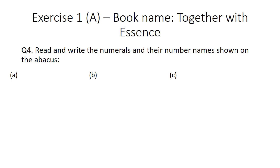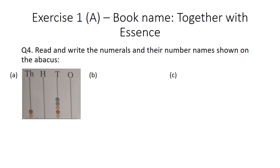Now let us start question number 4: read and write the numerals and their number names shown on the abacus. In the abacus, places are written. As I told you in lecture 1, we always start places from the right-hand side. Here O stands for ones, T stands for tens, S stands for hundreds, and TH stands for thousands.